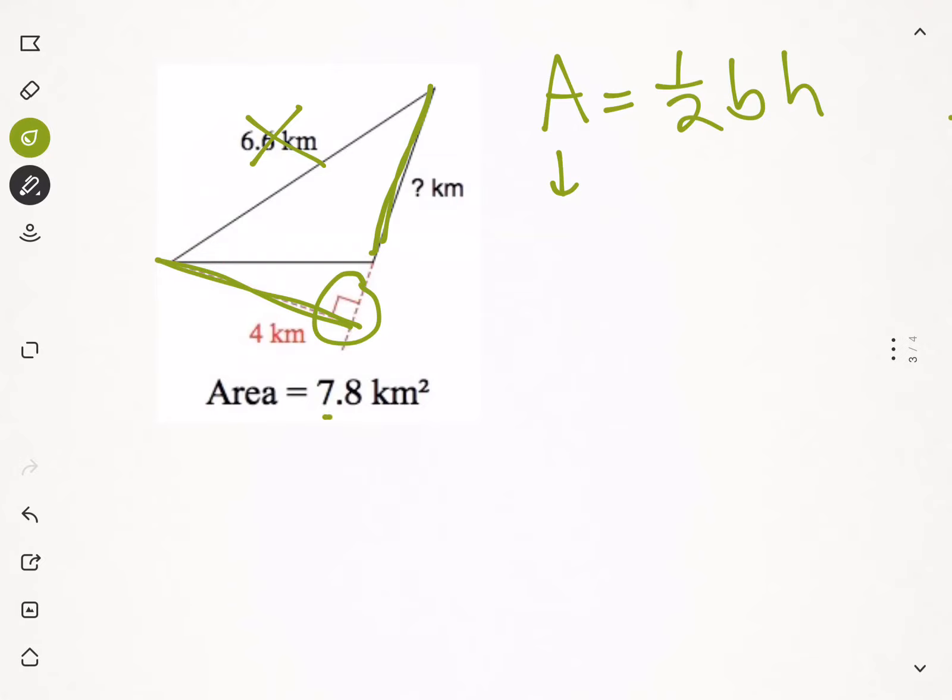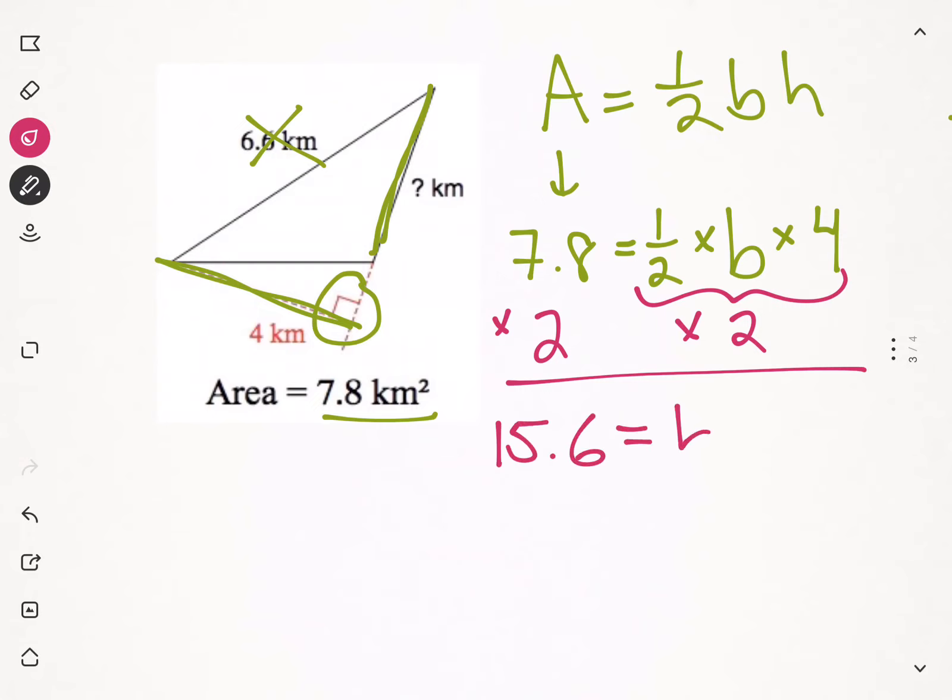And then I substitute in. The area, it tells us, is 7.8 equals one half times, we don't know the base, times the height is 4. Okay, we're going to follow those same steps. So, let's multiply both sides by 2. Multiply this side by 2. Multiply this side by 2.